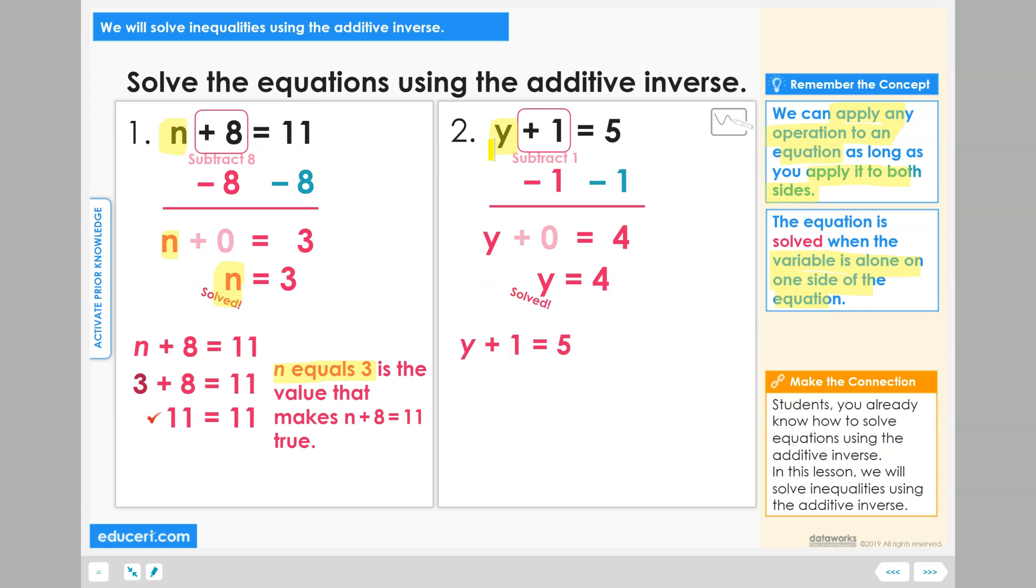And if you checked it, you would have 4 plus 1 equals 5, which indeed does equal 5, and that confirms that y equals 4 is the correct solution. Y equals 4 is the value that makes y plus 1 equals 5 a true equation.